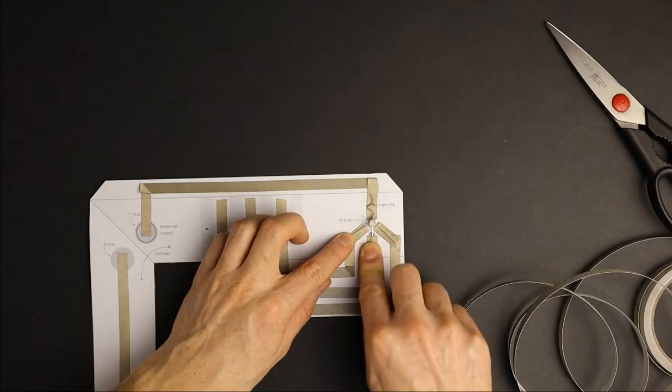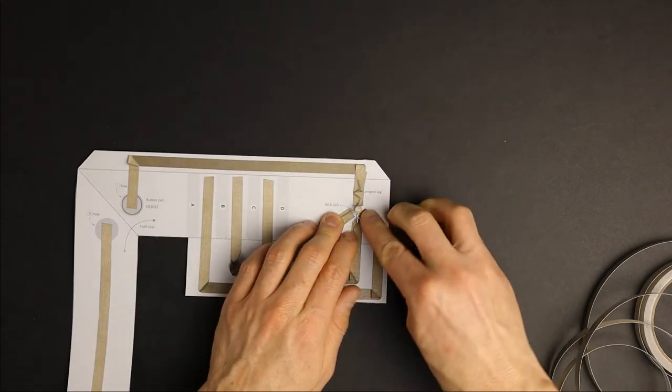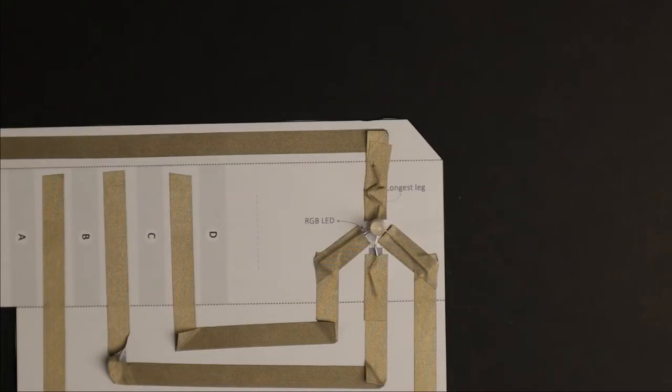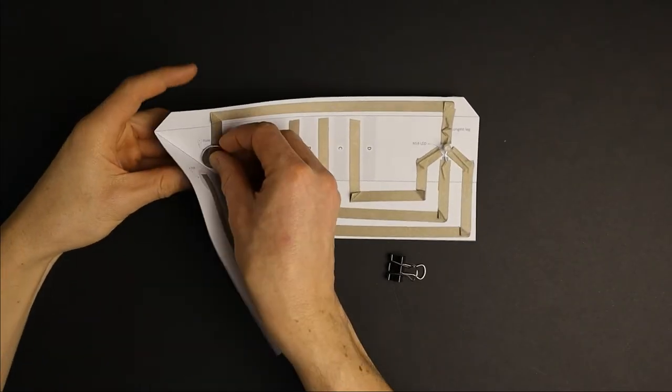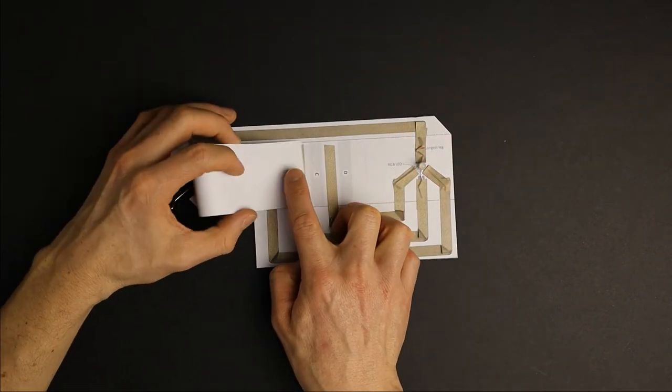Use short strips of conductive tape to glue the four legs in place like shown. Give it a firm press to make a long lasting connection. Now we simply connect the battery to our circuit with the binder clip and fold over the switch. Test all three colors.